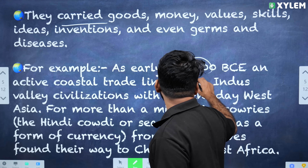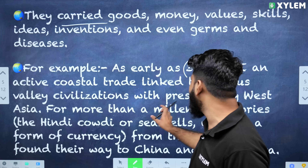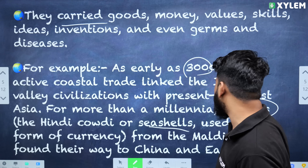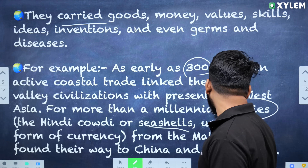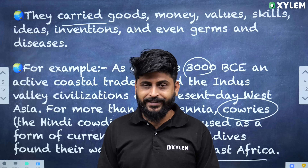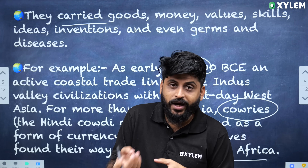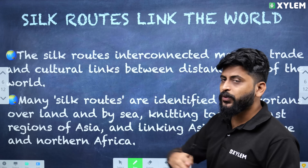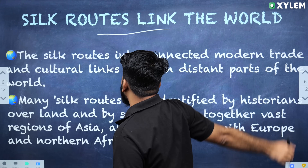As early as 3000 BCE, an active trade network linked the Indus civilization with present-day West Asia for more than a millennium. Cowries and seashells were used as a form of currency, found from the Maldives to China and East Africa. The two important routes are the Silk Route, consisting of both Sea and Land Routes.